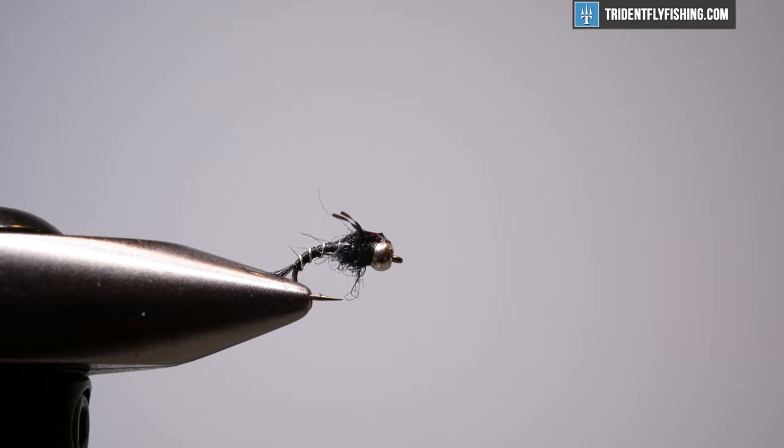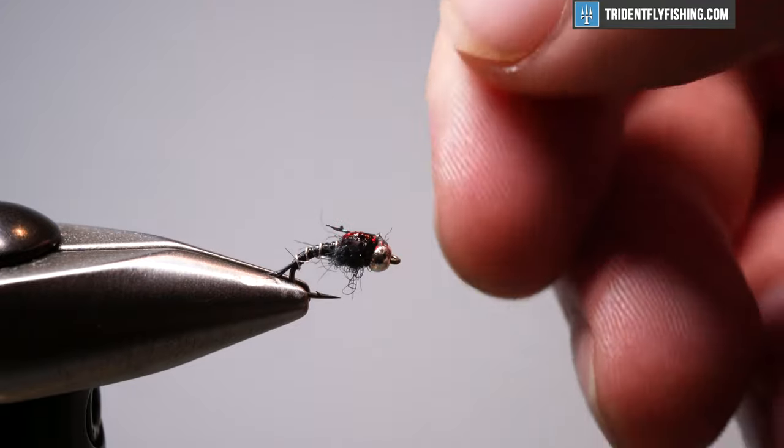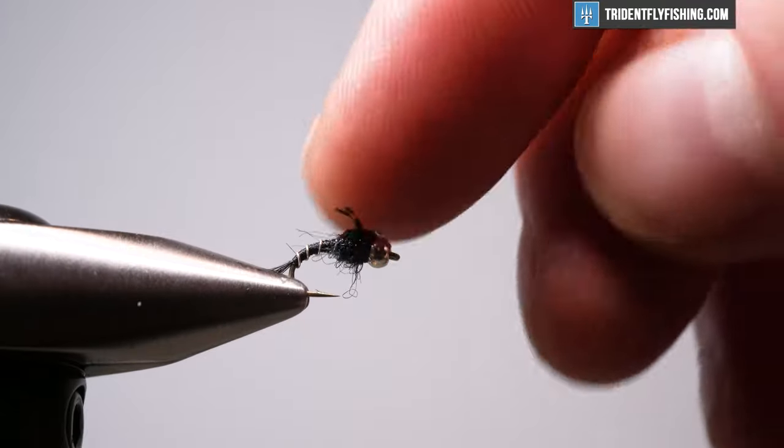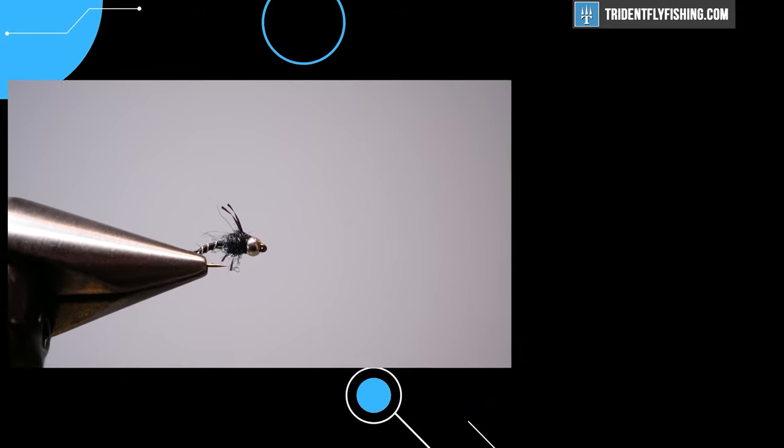All right guys, that's pretty much it. Super simple. Great little attractor. Baetis mayfly. Got it on a curved shank hook. Pretty durable. Good color. Black. I think an underutilized color. Give it a try, guys, and we'll see you next time.